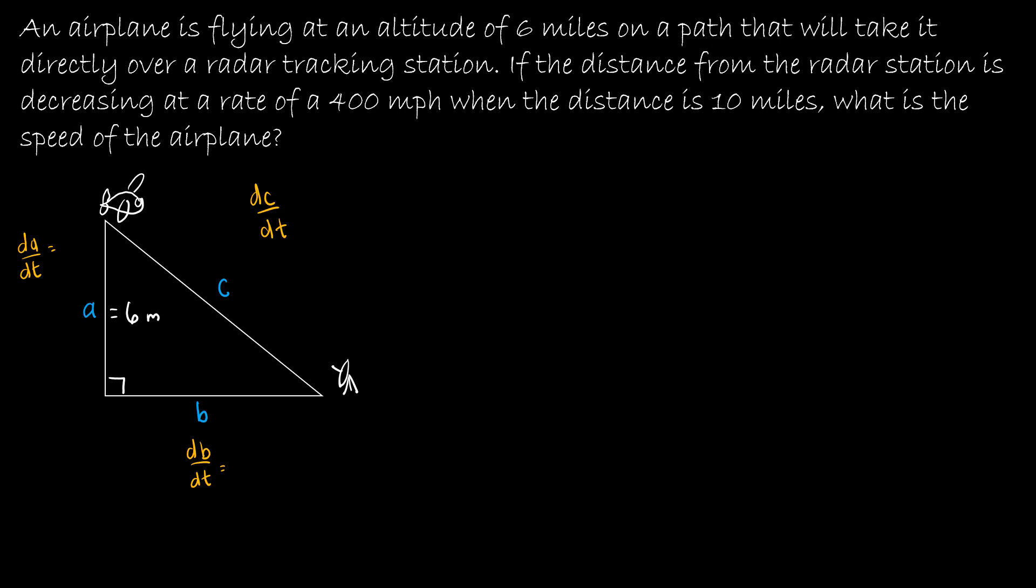On a path that will take it directly over the radar tracking station. If the distance from the station is decreasing at a rate of 400 miles per hour, we're talking about the distance from the station measured as C, which means this is decreasing at 400 miles per hour. When the distance is 10 miles, what is the speed of the plane?